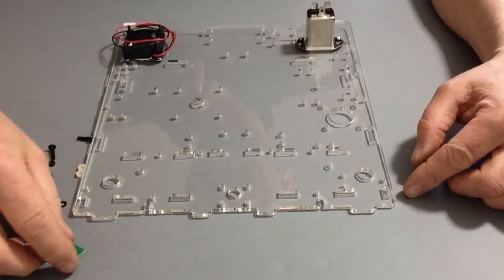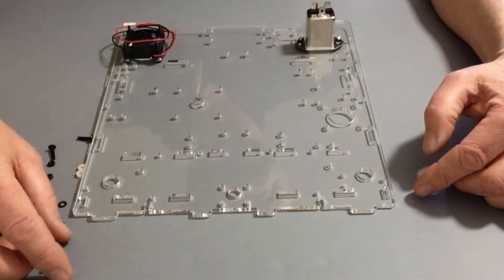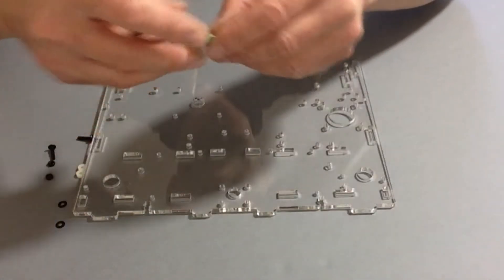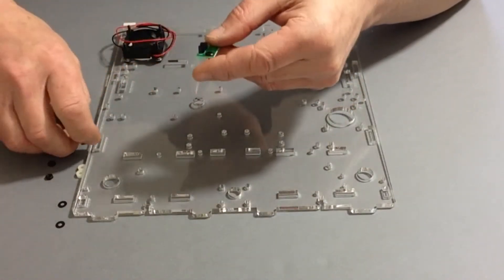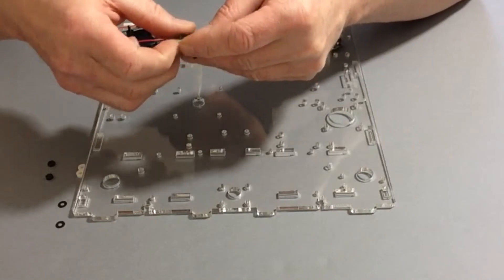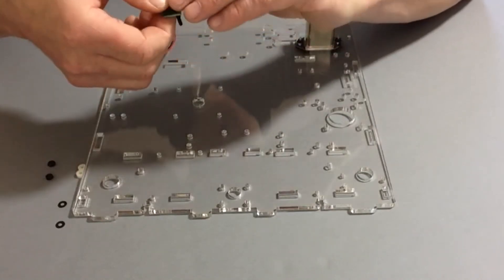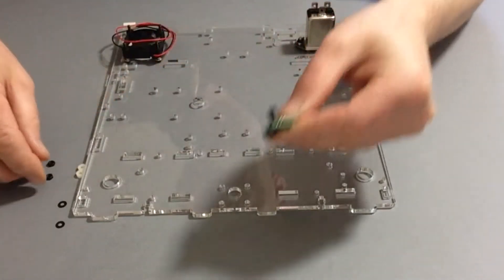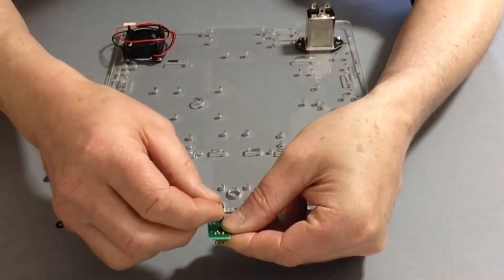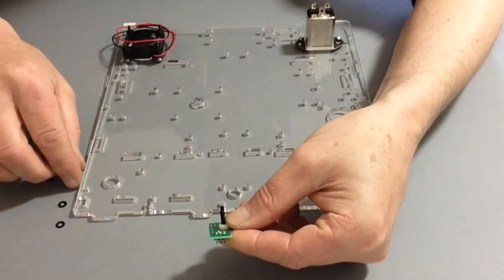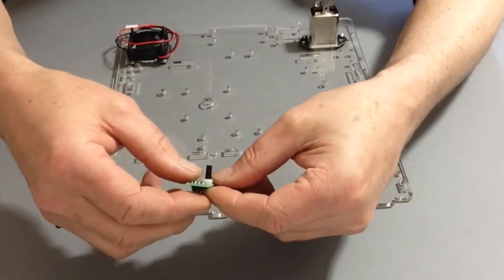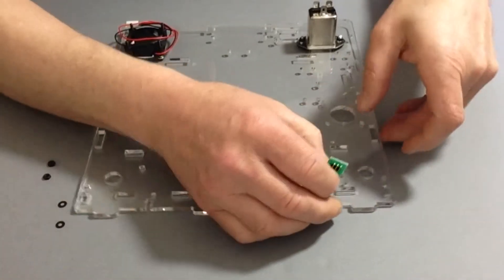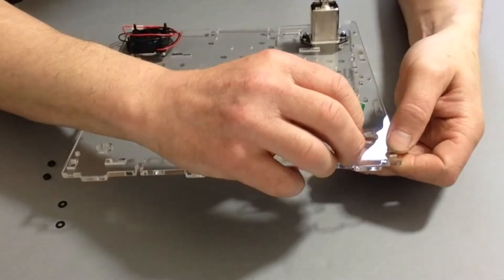So first of all what we need to do is get the limiter, a couple of the M3 truss head screws, and then place those through the holes with a couple of spaces over the screws like so, and then gently turn that around.